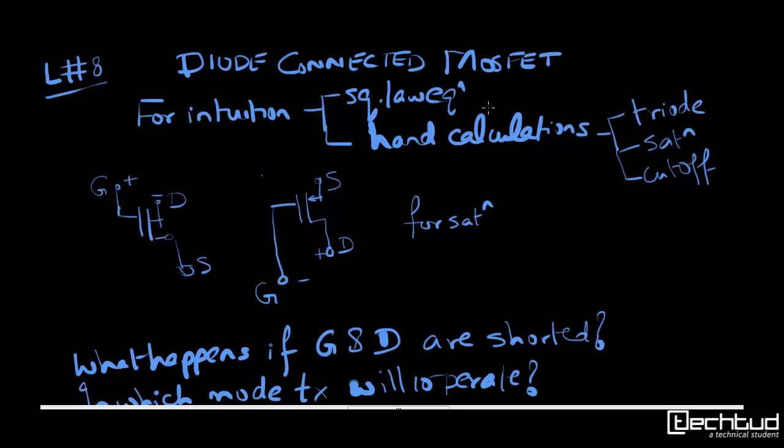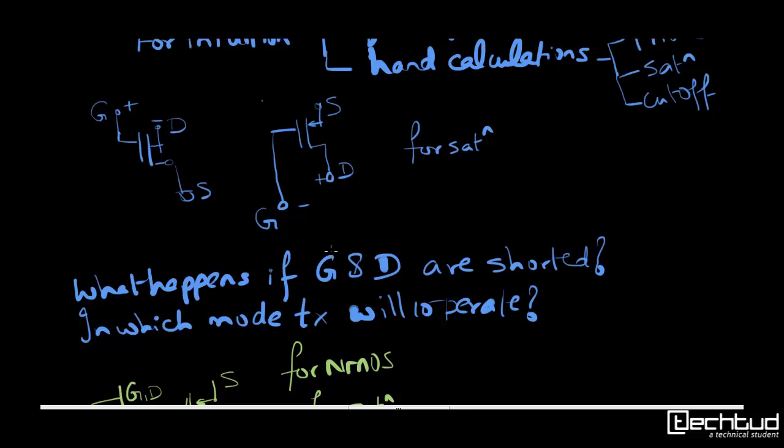For saturation we have seen for NMOS case that VGS can be higher than drain potential by threshold, based on square law equations. Similarly for PMOS, gate can go lower potential compared to drain by threshold amount. By this you can figure out the modes of operation of MOSFET.